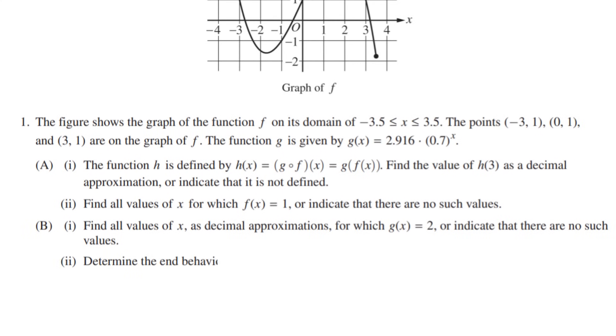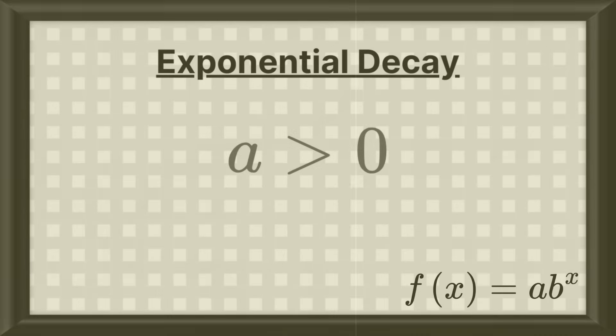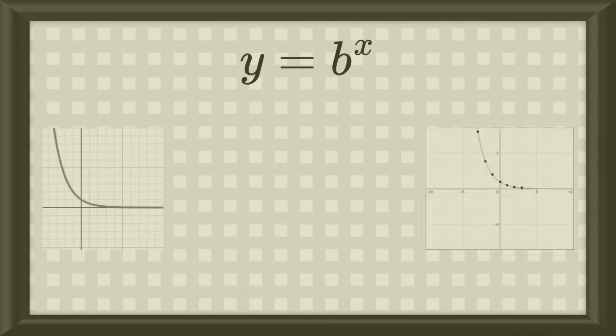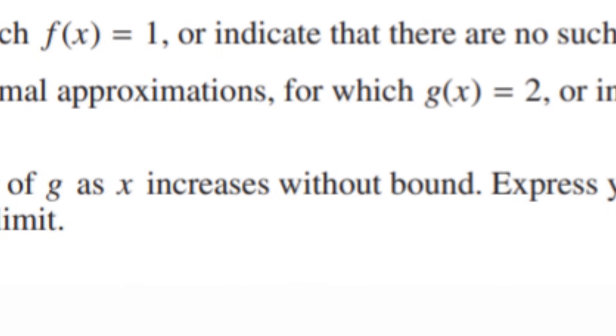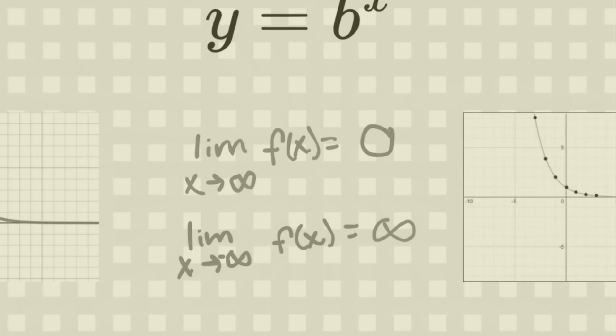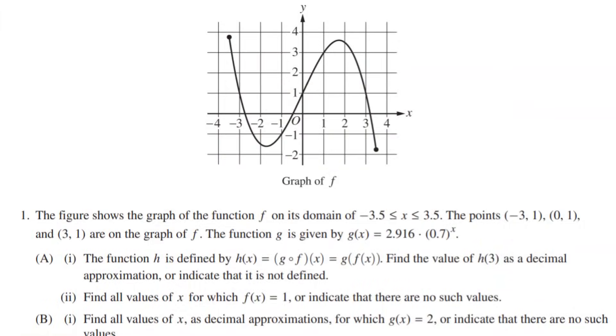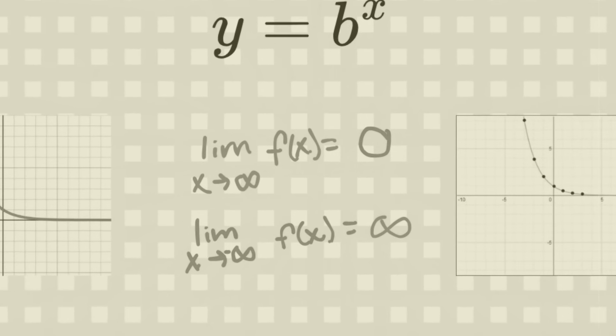Determine the end behavior of g as x increases without bound. Express your answer using the mathematical notation of a limit. We see that g is an exponential decay function, because b is between 0 and 1 being 0.7. If you remember from my 2.3 video, the end behavior of an exponential decay function is this. And since we are talking about when x increases without bound, we are talking about this one. I'm telling you, man, this is why it's important to watch my videos. Or you could just graph the g function on your calculator and use the graph to determine the end behavior, but I like my way better.